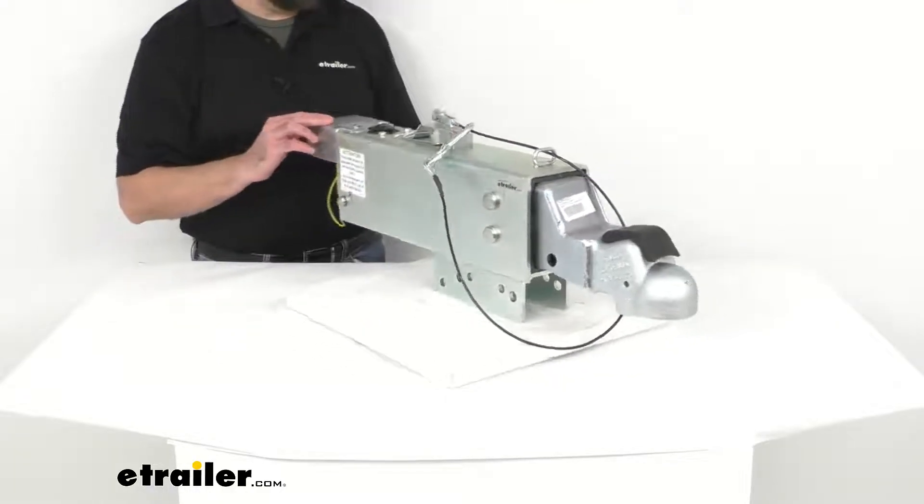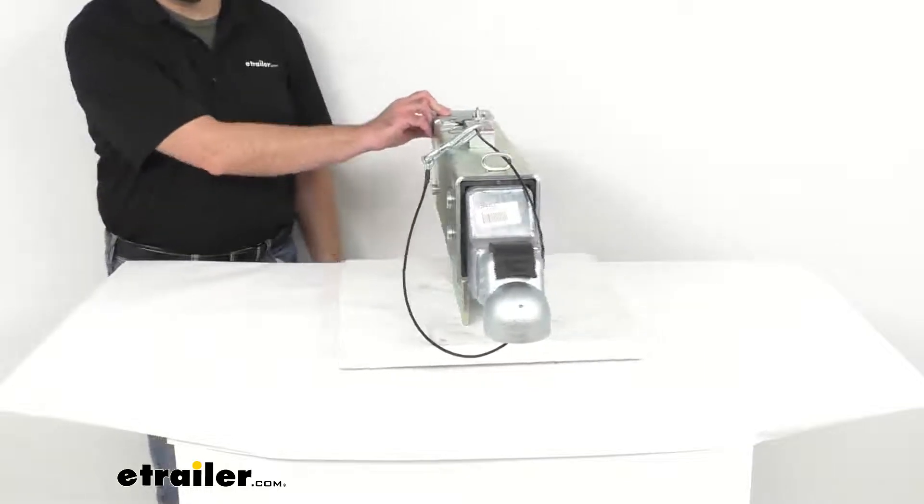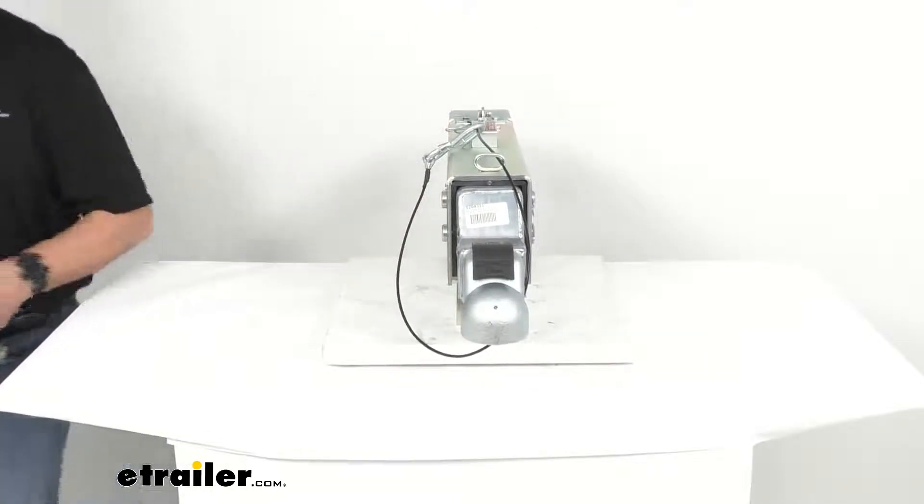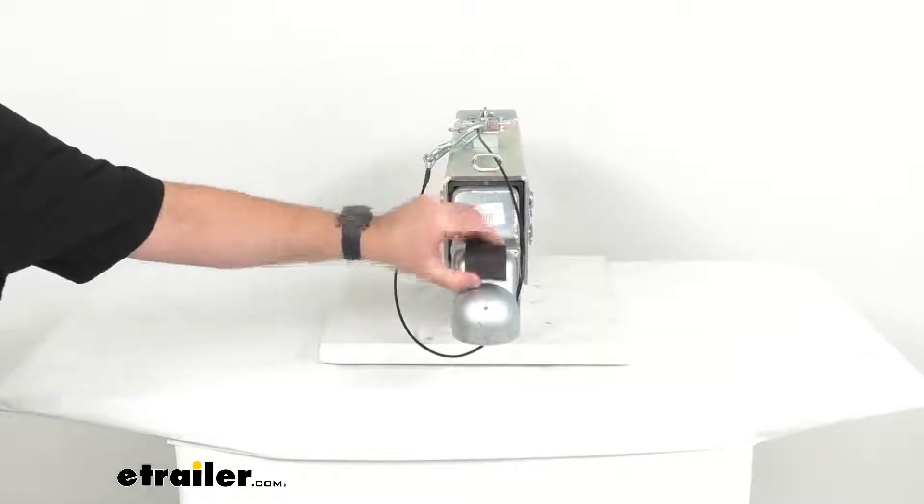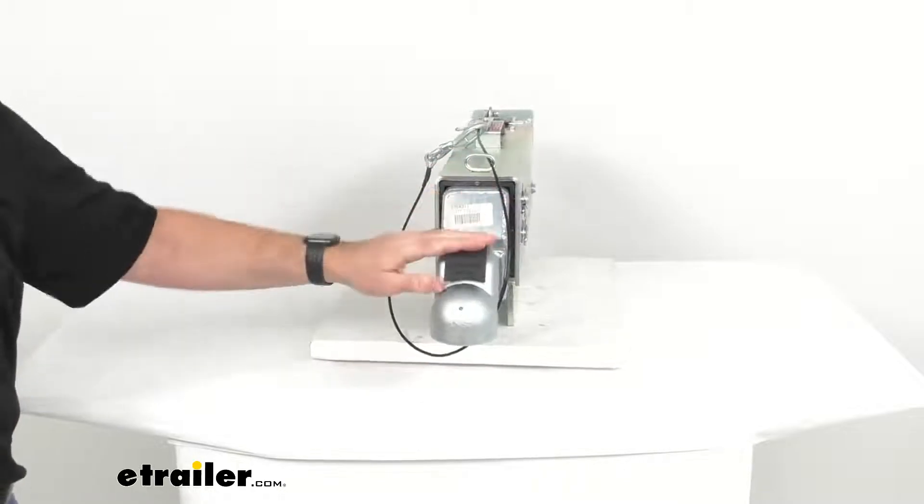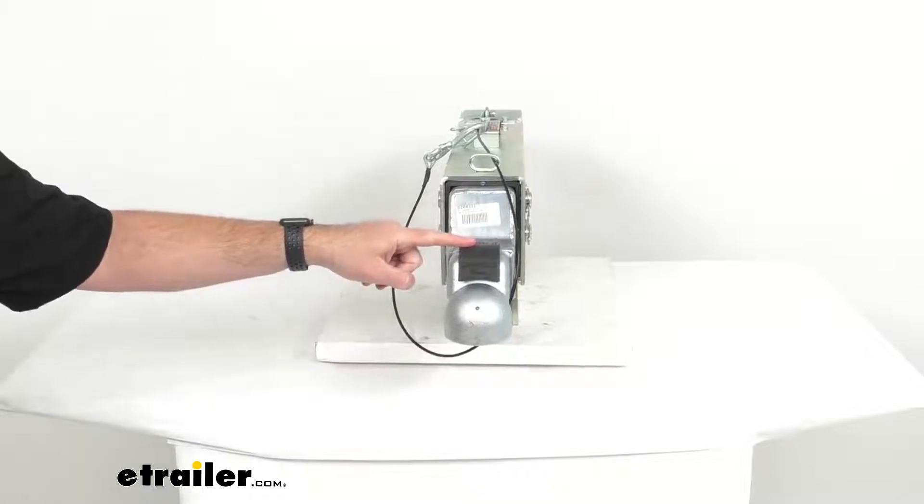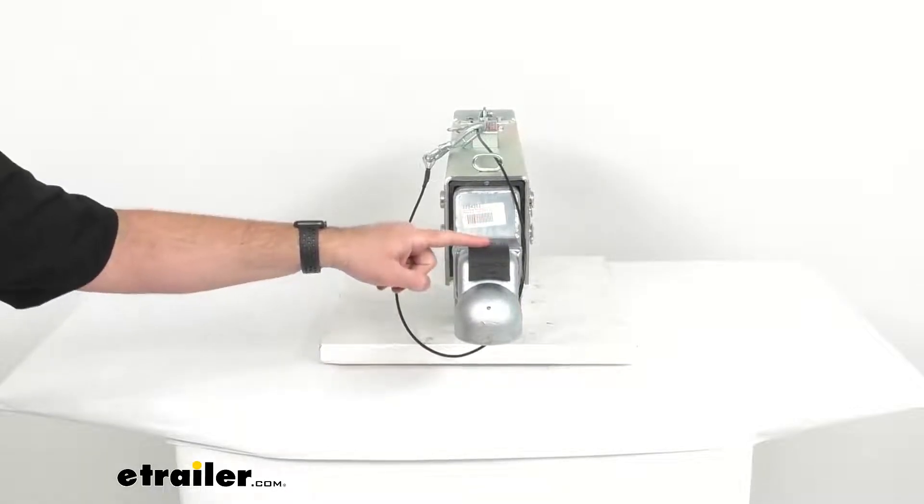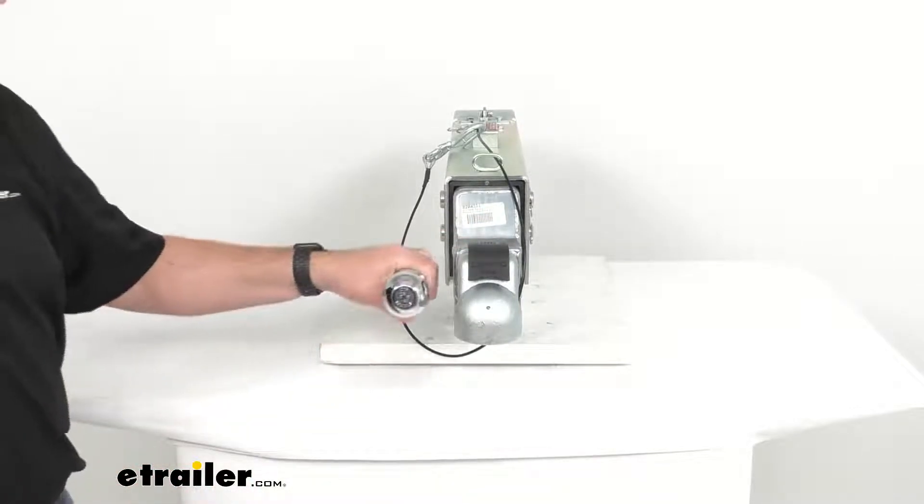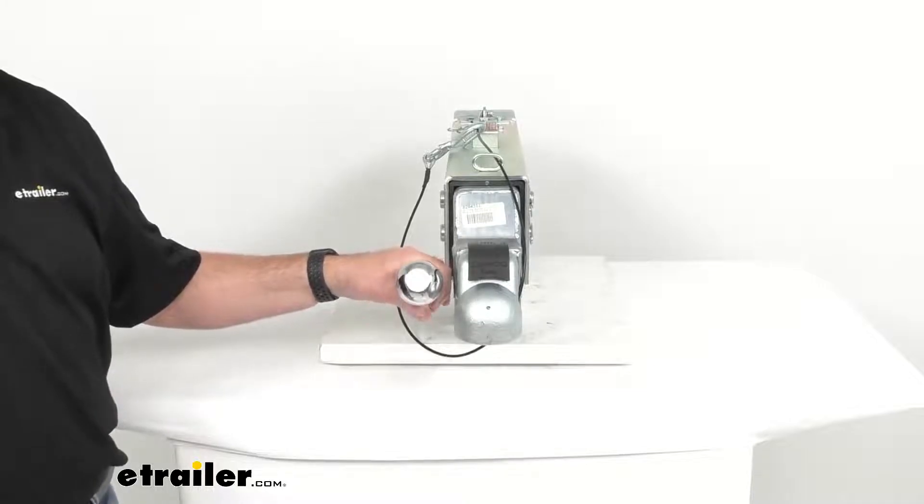The coupler uses an easy latch coupler mechanism for simple secure hookup and disconnect. This will let you hook up when the latch is in the closed position as it is now. This is designed to fit onto a 2 and 5/16 inch hitch ball.